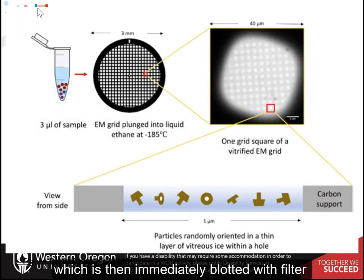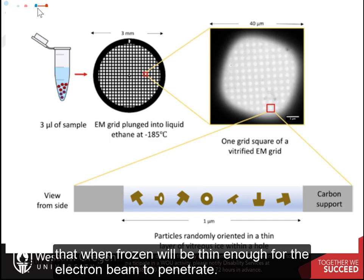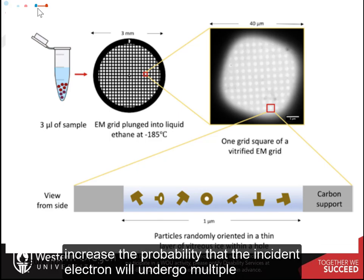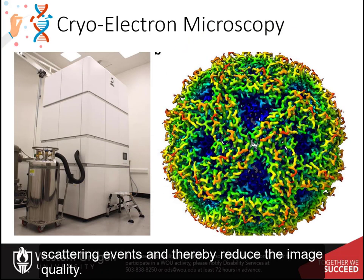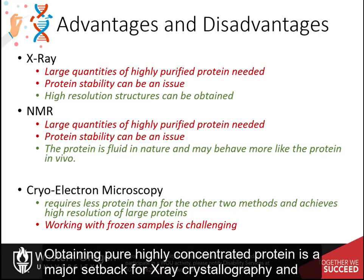The grid is then immediately blotted with filter paper, with the aim of creating a film of buffer and protein on the grid that, when frozen, will be thin enough for the electron beam to penetrate. Optimizing the ice thickness is a vital step in sample preparation, as thicker layers of ice increase the probability that the incident electron will undergo multiple scattering events, and thereby reduce the image quality. The high-resolution structure of lumazine synthase is shown here as an example.